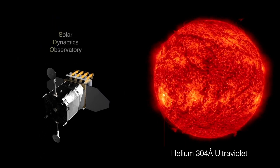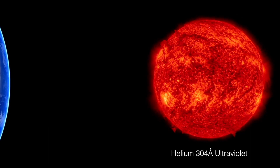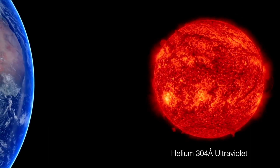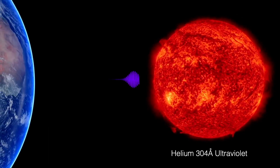This ultraviolet light can't make it to the surface of the Earth for observation because it's, thankfully, absorbed by the atmosphere.